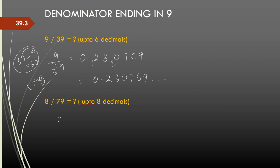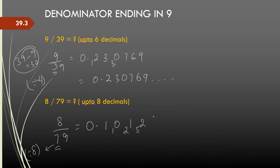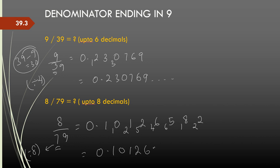One more example: if I was dividing 8 over 79, I take 1 more than 7, which is 8. So I divide everything by 8. So 0 point, start dividing by 8. I want up to 8 decimals. 8 ones are 8, remainder; 8 zeros are 0, then 10, 1 is the remainder; 8 ones are 8, 2; 8 twos are 16, 5 is the remainder; 8 sixes are 48, 4 is the remainder; 8 fives are 40, 6 is the remainder; 8 eights are 64, 1 is the remainder. So 8 twos are 16, 2 is the remainder. So up to 8 decimals this is: 0.10126582.